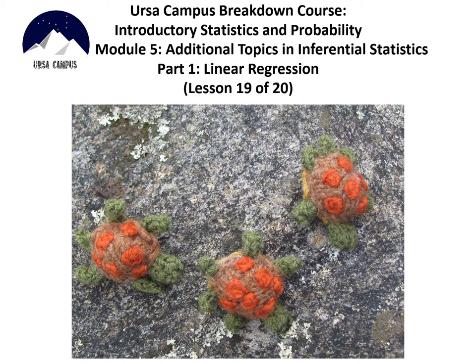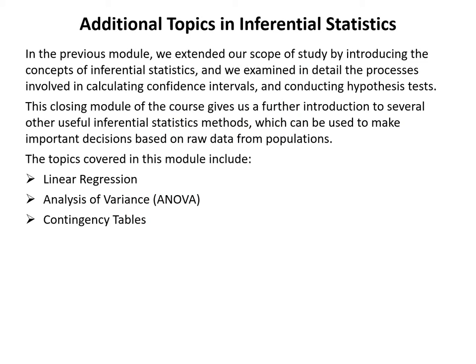Hello and welcome to lesson 19 of 20 in the IRSA Campus breakdown course on introductory statistics and probability. This is module 5: additional topics in inferential statistics, part 1: linear regression. In the previous module we extended our scope by introducing inferential statistics, examining confidence intervals and hypothesis tests. This closing module introduces further inferential statistics methods, including linear regression, analysis of variance (ANOVA), and contingency tables.